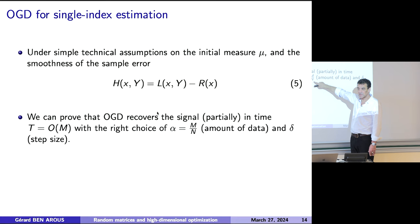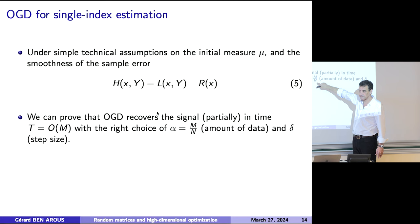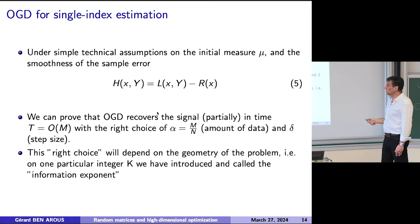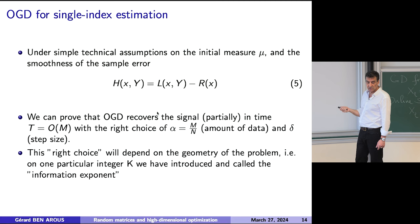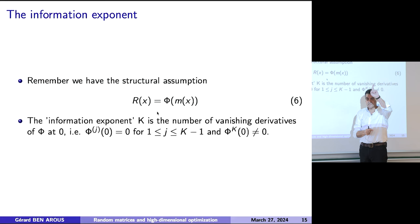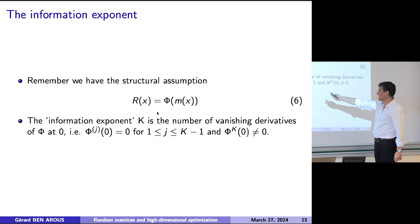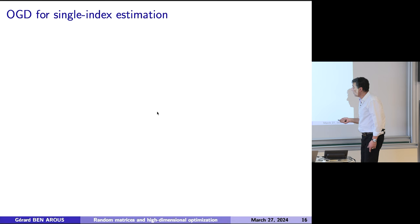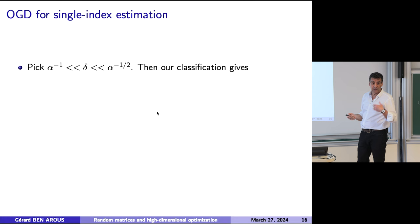Let me explain what the information exponent is. Remember we have the structural assumption: the population loss is a rank-one thing, depending only on a function of a one-dimensional thing — the latitude. If X* is my north pole, m(x) is just the latitude. The information exponent is the number of vanishing derivatives at zero. So you look at psi — the loss as a function of latitude — and you look at the first time the derivative is non-zero. k=1 means the first derivative is non-zero; psi_k is non-zero.